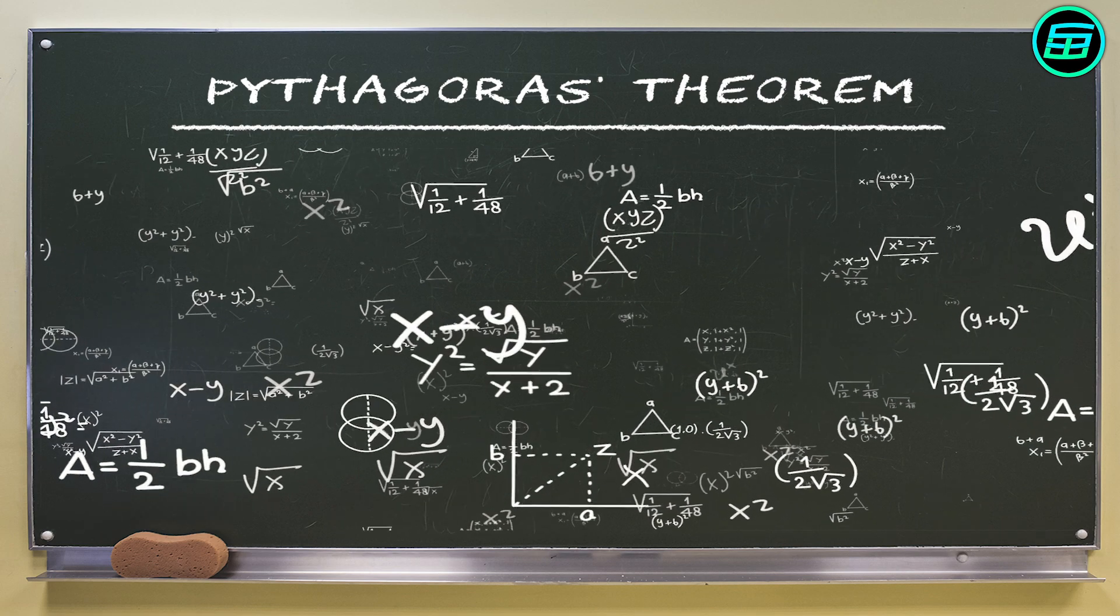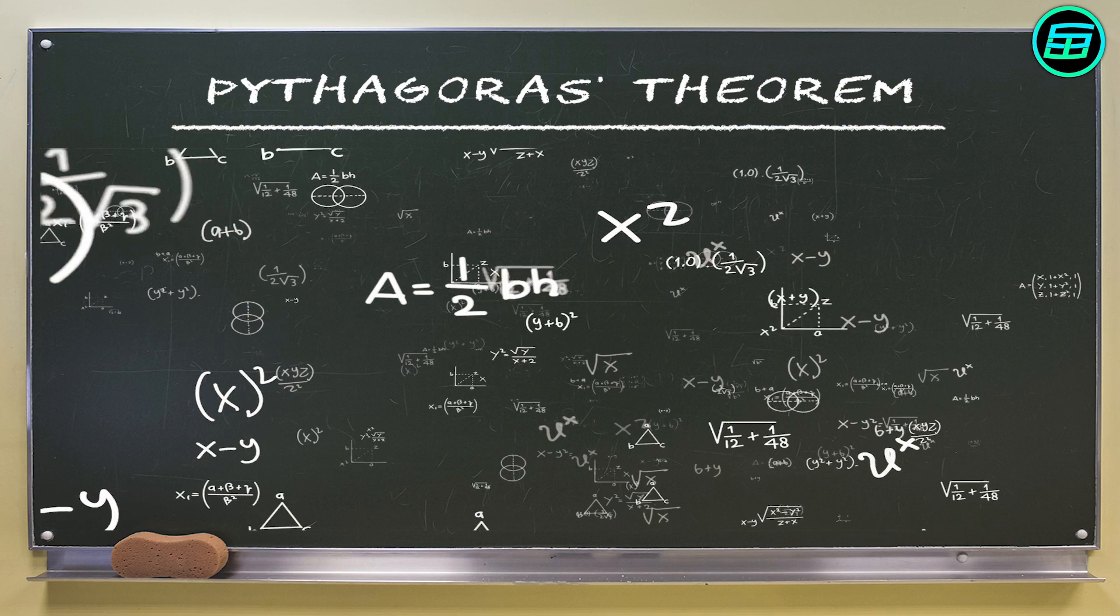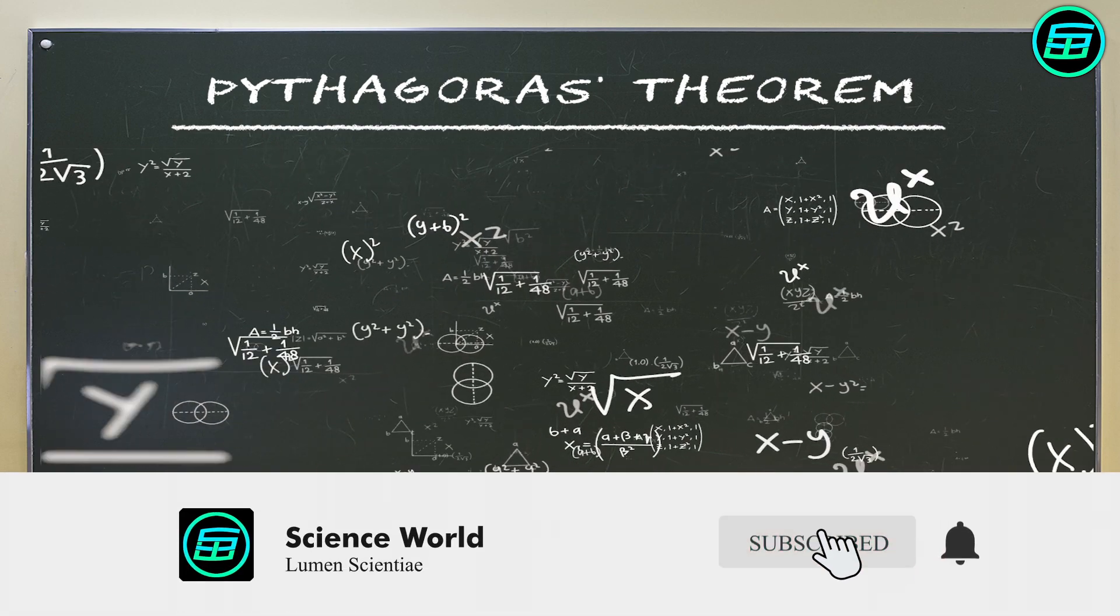Pythagoras' Theorem has been proved in many different ways over the centuries. We'll look at what's perhaps the simplest method. It just involves rearrangement.